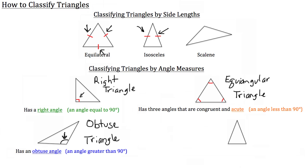The last type of triangle is in the bottom right hand corner. This type of triangle has three angles that are acute but not congruent — that is going to be an acute triangle. You can tell that all these angles are less than 90 degrees, but none of them are actually congruent to each other. If they were congruent, it'd be just like the equiangular triangle above — you'd see the little red congruency marks in each of the angles — but they're not congruent, so that is an acute triangle.